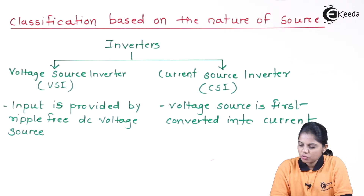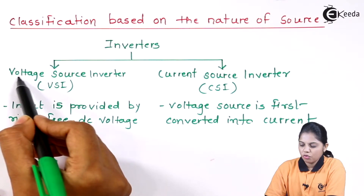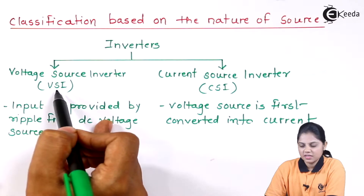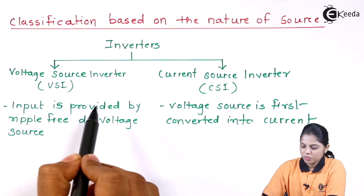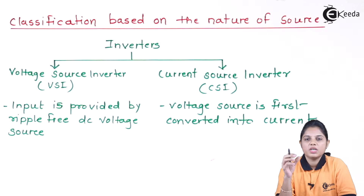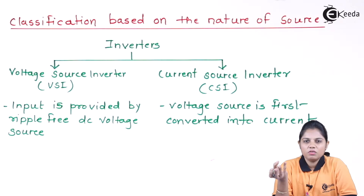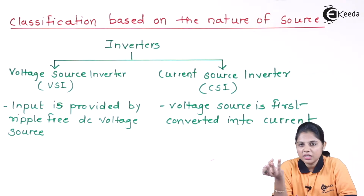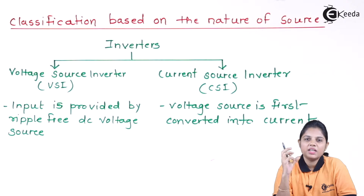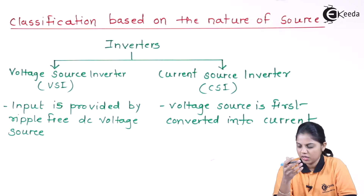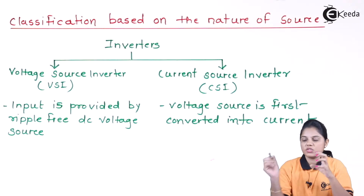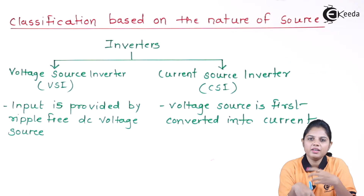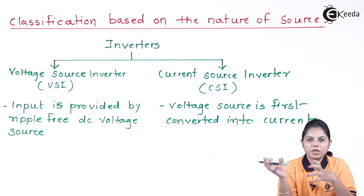So you can go for a Voltage Source Inverter, named VSI, or a Current Source Inverter, named CSI. For a VSI, the input is provided by a ripple-free DC voltage source — it will be a DC voltage connected to that particular circuit, and it should be ripple-free. When it comes to the Current Source Inverter, your voltage source is first converted into current, and then it is applied as a current source to that particular circuit.